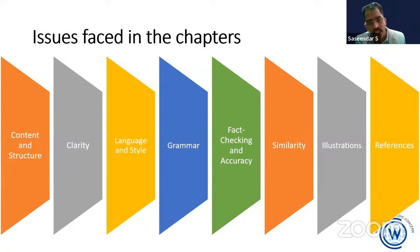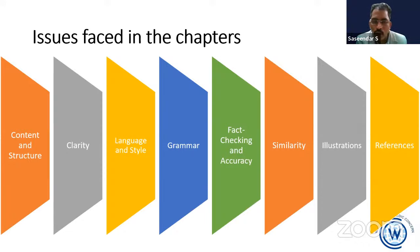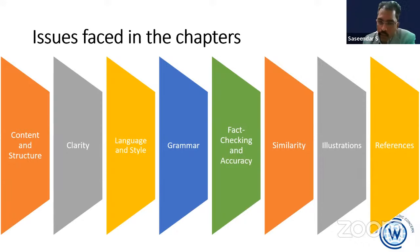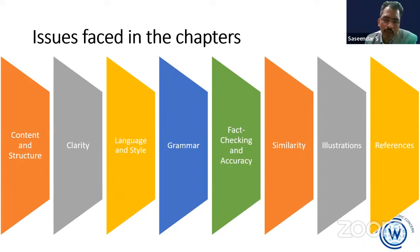Issues were faced for each chapter. We faced almost all the issues possible with most of the chapters: issues in content and structure, clarity of language — since there were authors from all around the world — grammar, fact-checking and accuracy, the possibility of high similarity indices of 30% to 40% with past publications. Illustrations have to be new; they cannot be reproduced without permission from past publications, and references have to be appropriately done. With proper guidance and suggestions, the authors will be able to understand all these issues and take it forward with clarity.